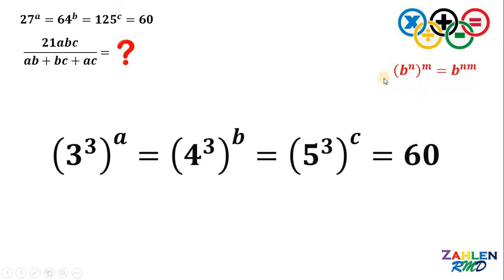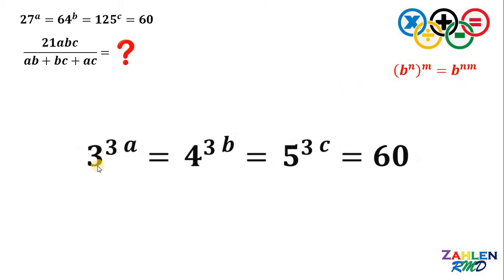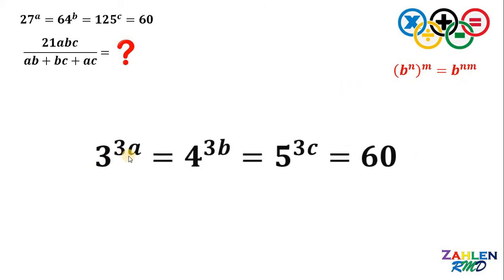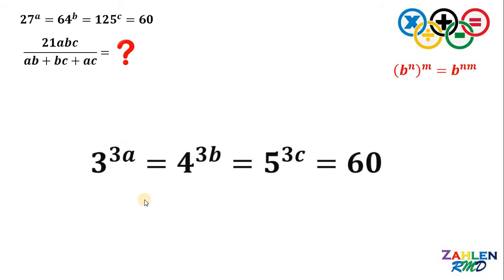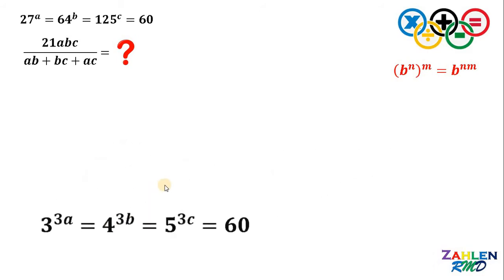If we have B raised to N raised to M, it is equal to B raised to N times M. Therefore, this becomes 3 raised to 3A, this becomes 4 raised to 3B, and this becomes 5 raised to 3C. Let's set aside this result.